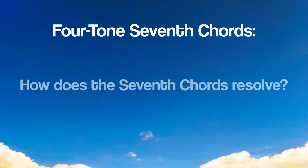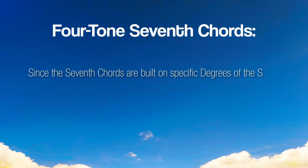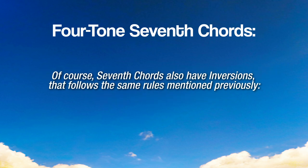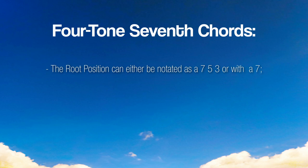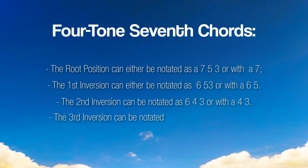How does the 7th chord resolve? Since 7th chords are built on specific degrees of the scale, they resolve following the rules of functional harmony seen in the previous video. Of course, 7th chords also have inversions following the same rules mentioned previously. The root position is notated as 3-5-7 or with a 7. The first inversion is notated as 3-5-6 or with 5-6. The second inversion is notated as 3-4-6 or with 3-4. The third inversion is notated as 2-4-6 or with 2-4 or simply 2.